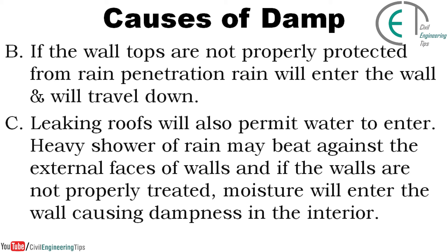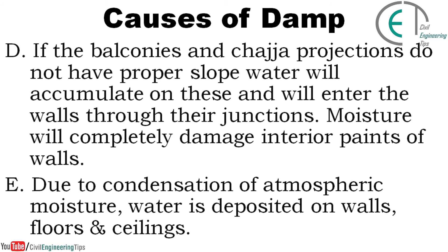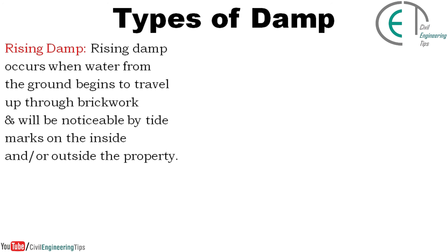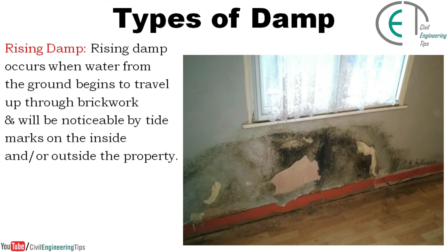Heavy showers of rain may beat against the external faces of walls, and if the walls are not properly treated, moisture will enter causing dampness in the interior. If balconies and other projections do not have proper slope, water will accumulate on these and enter the walls through their junctions. Moisture will also completely damage interior paints of walls due to condensation of atmospheric moisture, which causes water to be deposited on walls, floors and ceilings.